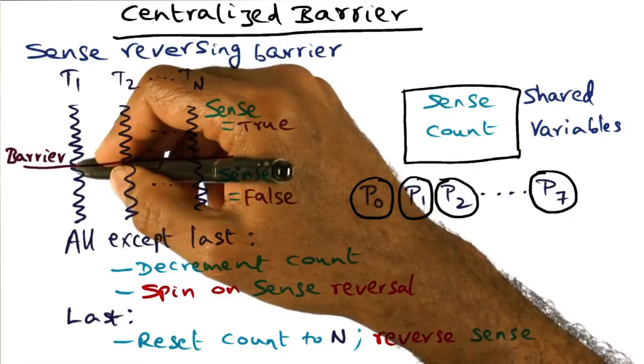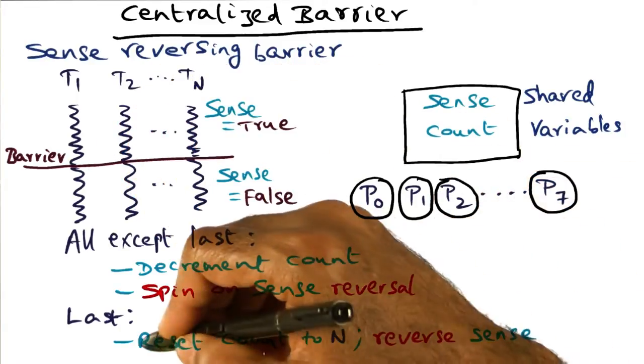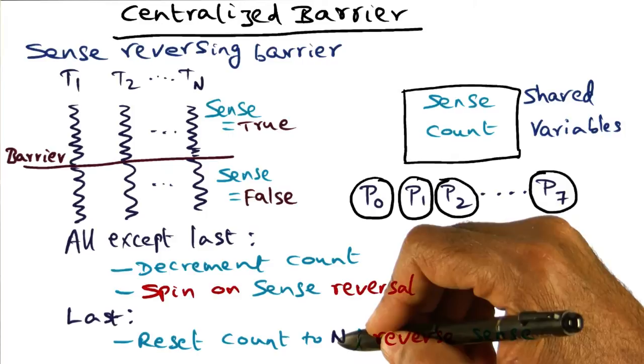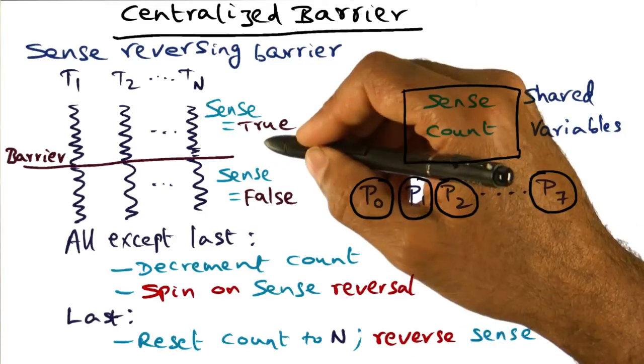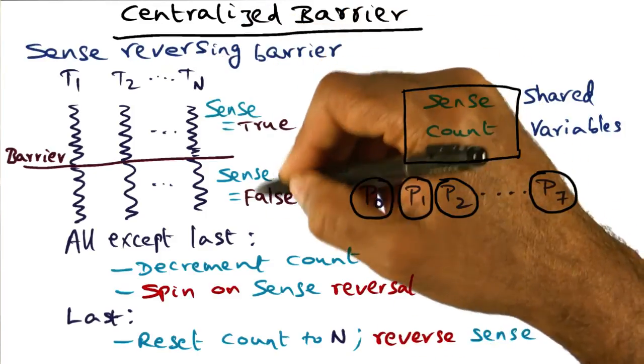So the last processor comes along and finds that the count has become zero. It'll reset it to n. No problem with that. And then it is going to reverse the sense flag. It used to be true here, it is going to reset it to false.